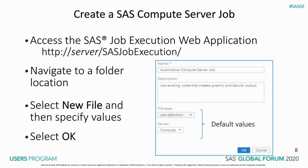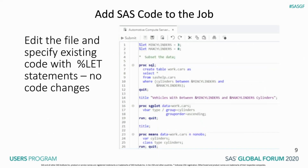You begin by accessing the SAS job execution web application using your web browser, available at the address shown here. Navigate to a folder location to store the job, then select New File and specify a name and optional description. We specify 'Automotive Compute Server Job' for the name. Accept the default values for the other fields in the dialog, then press OK. Edit the file and specify the exact SAS code shown earlier — no changes to the code are needed. Select Save, and then exit the Editor tab.